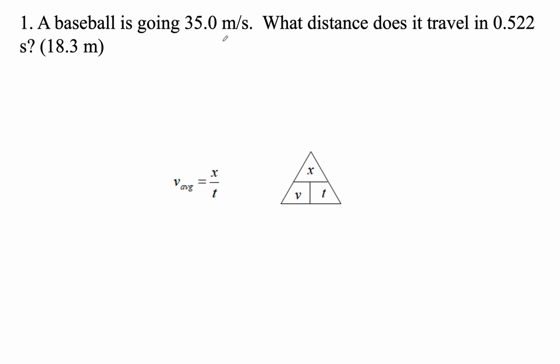So baseball is going 35 meters per second. That makes this the velocity, right? Because it's meters per second. And then 0.522 seconds, that makes that the time, because it's in seconds.